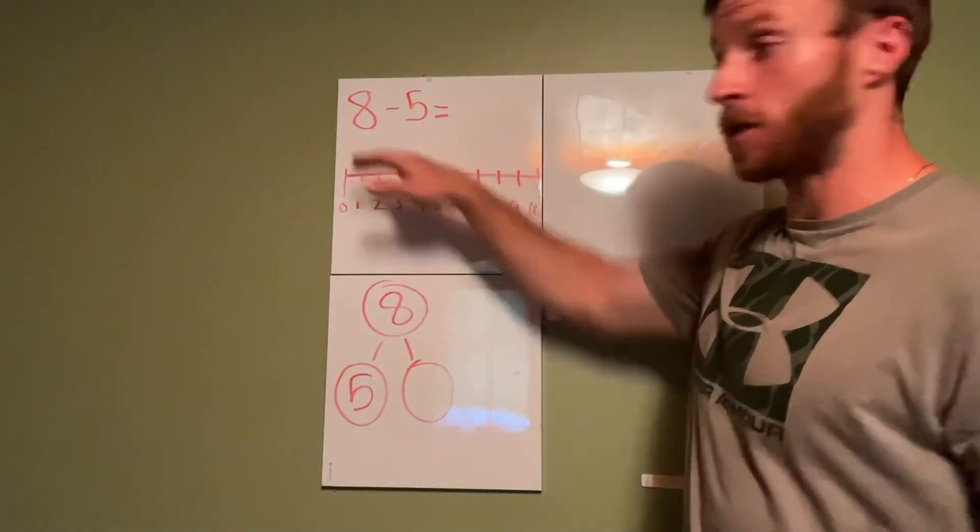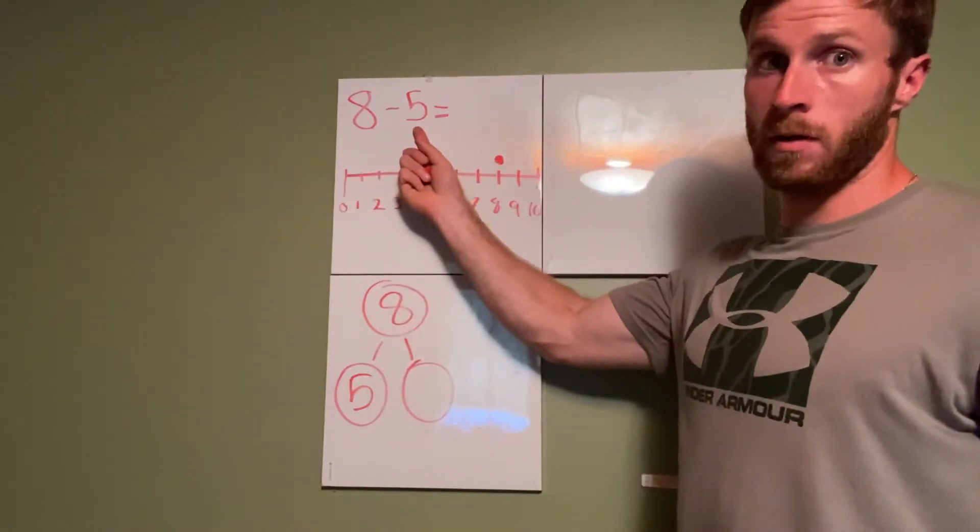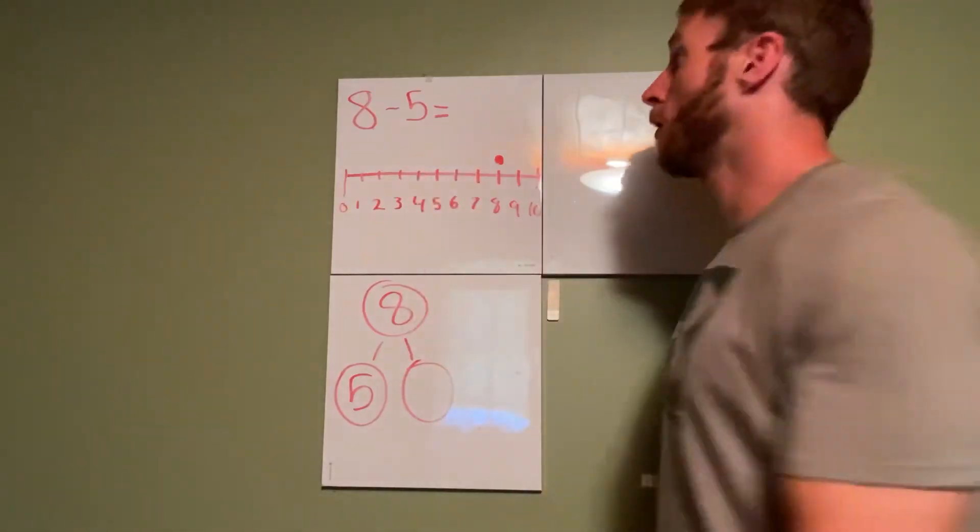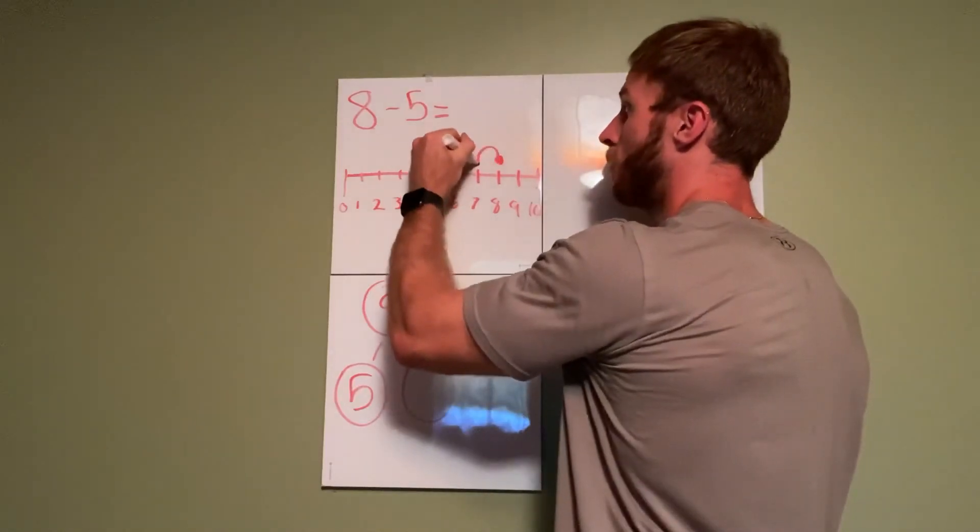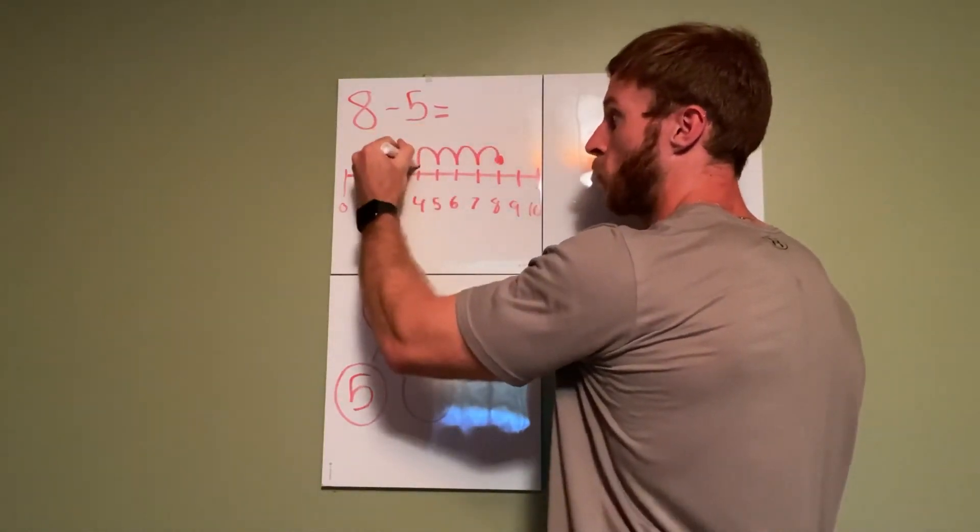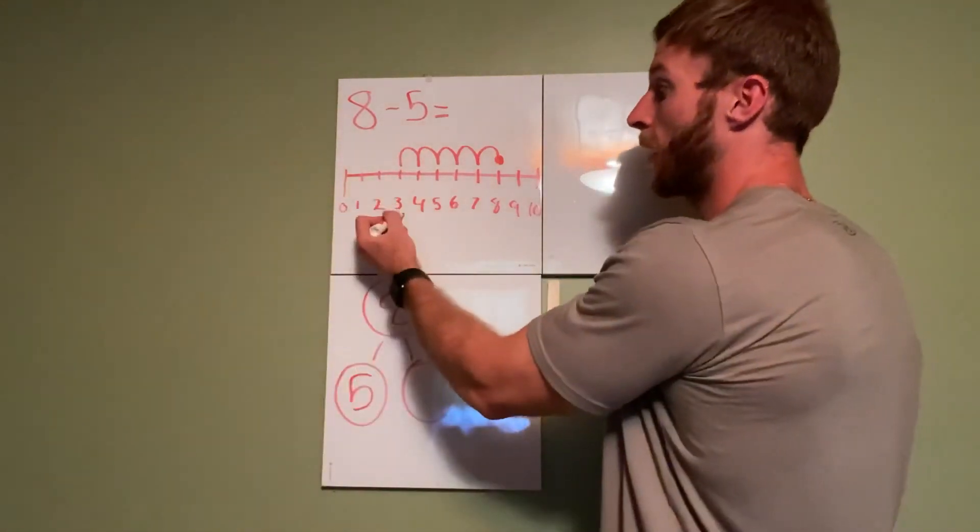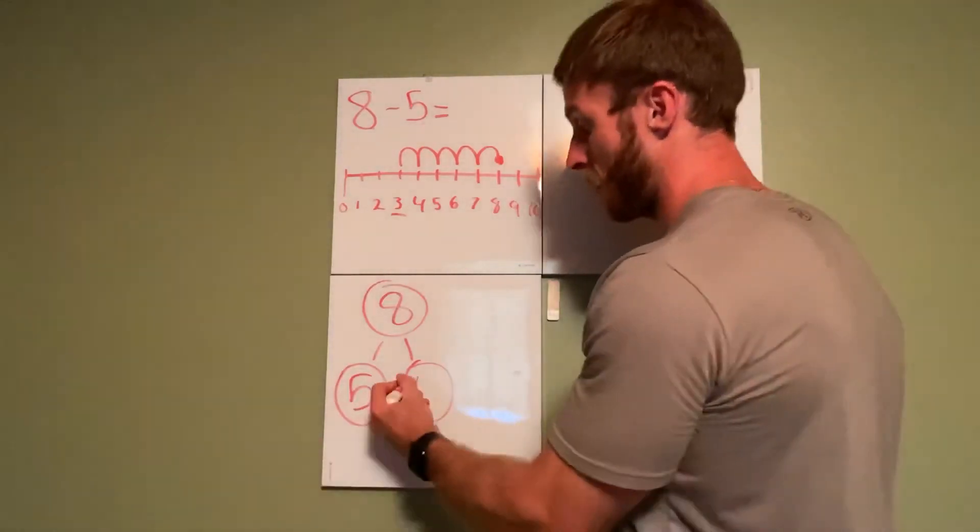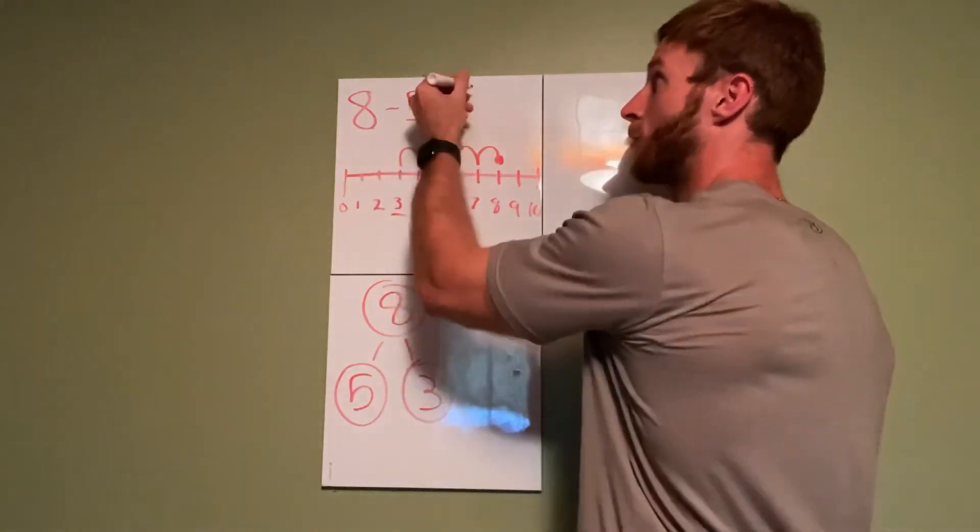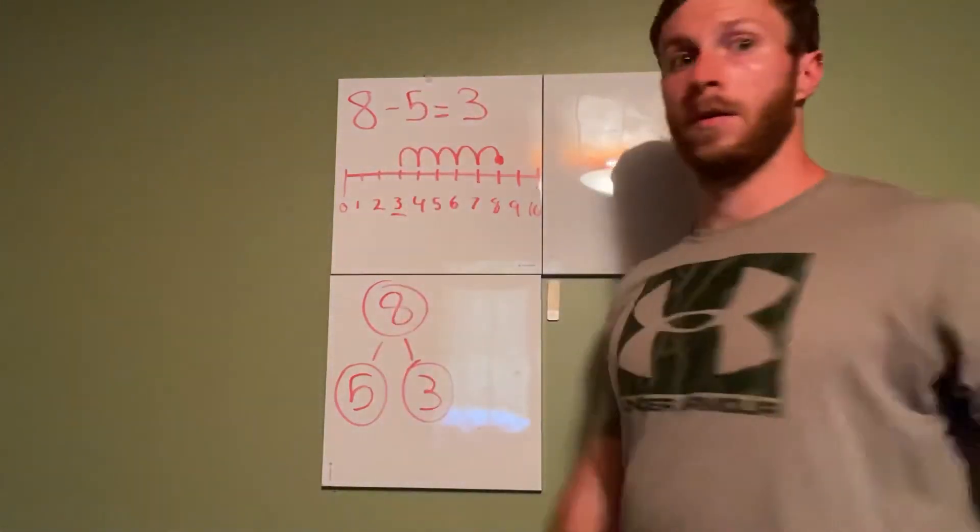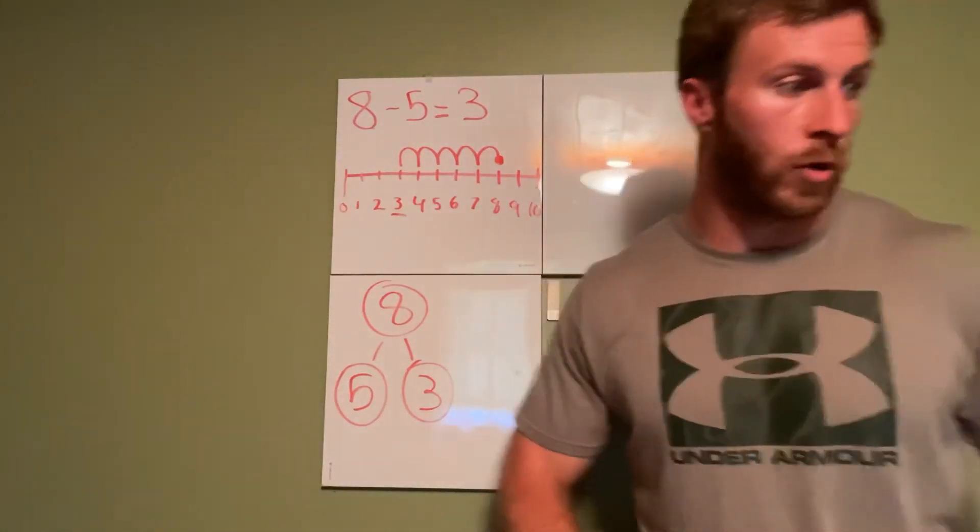So remember when we're using a number line, I start with the first number we have which is eight, put a dot there, and I'm going to count back how many times? Five times. So I'm gonna come from here and I'm gonna count back five numbers and see which number I land on: one, two, three, four, five. All right, what number did I land on? I landed on the number three, so that must mean eight minus these five equals three. All right, we understand that a little bit. Let's try one more and we'll call it a day.